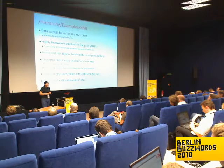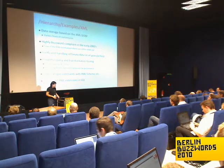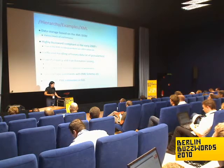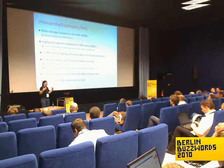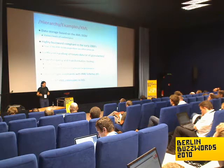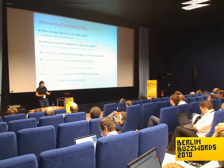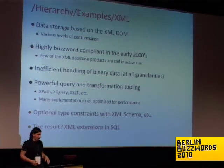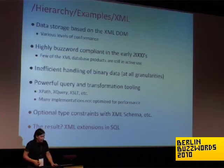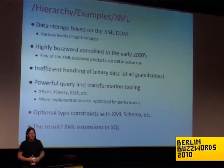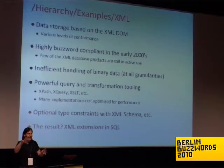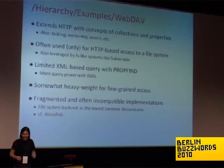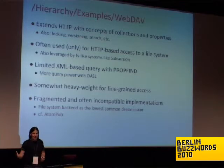XML databases were cool some time ago, not so much anymore, but there are some examples to learn from them. They did text very well, binary not that well. They had theoretically great search and query capabilities, but in practice the implementations were suboptimal, to say the least. You could do type constraints on XML databases in various ways. Currently what remains of XML databases is basically extensions for SQL — storing an XML document within a SQL database and accessing it through a hybrid SQL/XPath approach. Not that nice, but an interesting experiment on what you could do.